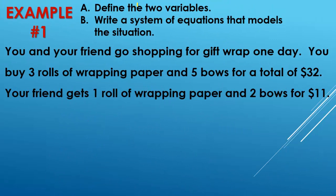This is example one. Okay, so again, two parts. Part A, define the two variables. Part B, write a system of equations that models the situation. All right, so the problem is you and your friend go shopping for gift wrap one day. You buy three rolls of wrapping paper and five bows for a total of $32. Your friend gets one roll of wrapping paper and two bows for a total of $11. So first things first, we have to define the two variables.